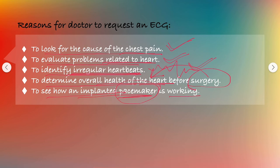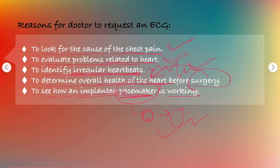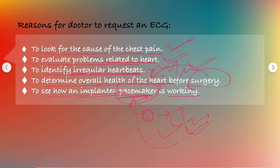What is a pacemaker? The pacemaker is a small device which is implanted and placed in the chest to help control the heart rate and stabilize abnormal heart rhythms. ECG also checks the implanted pacemaker's working.